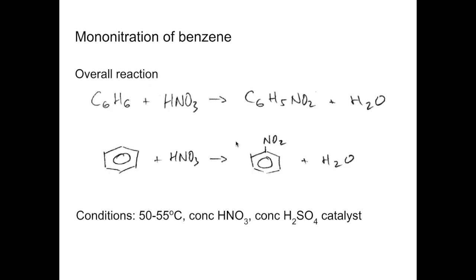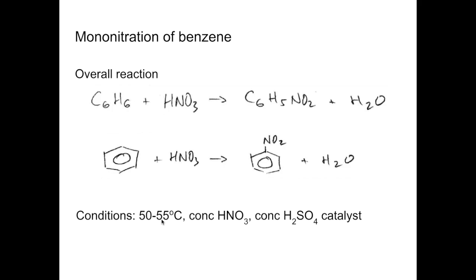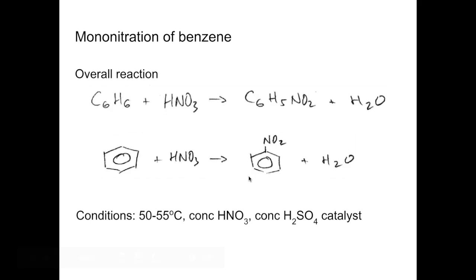Quick note about the temperature. If you use too high a temperature you get what's called polynitration, so you get multiple substitutions of nitro groups around the ring. And the problem with that is they are explosive.